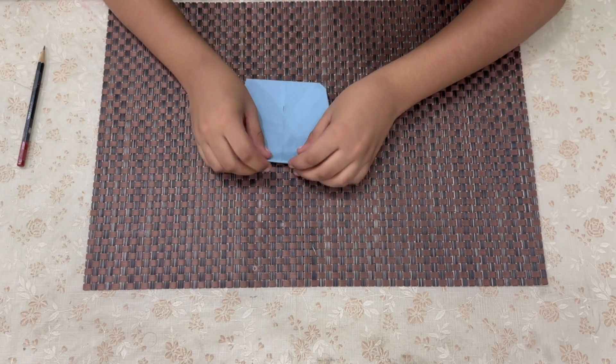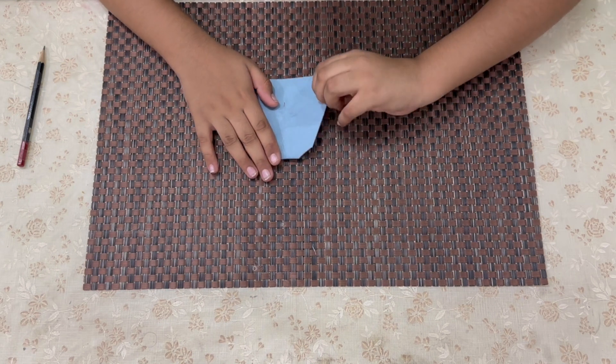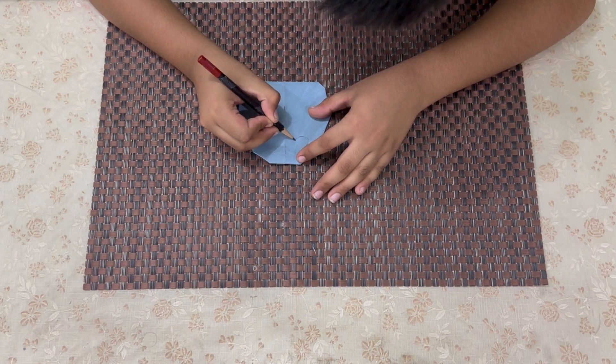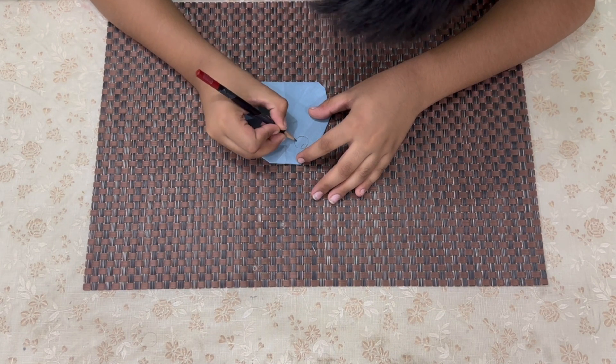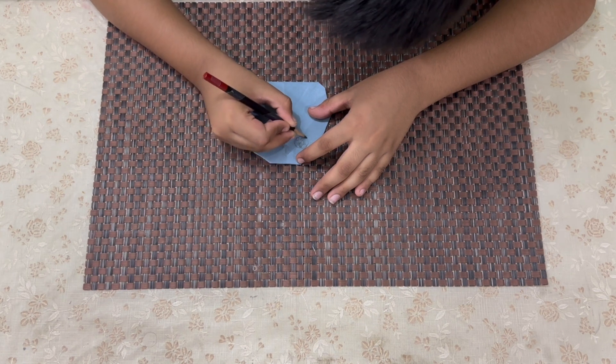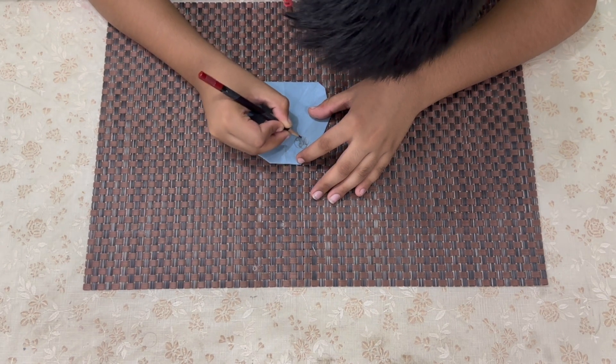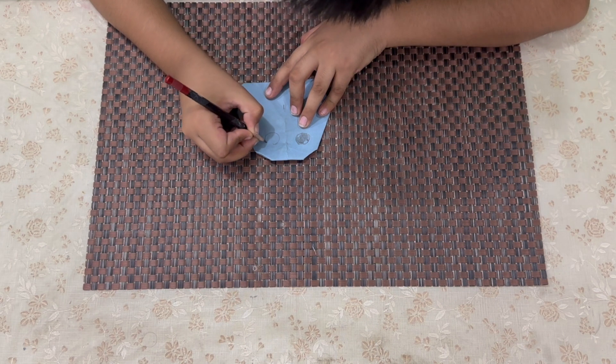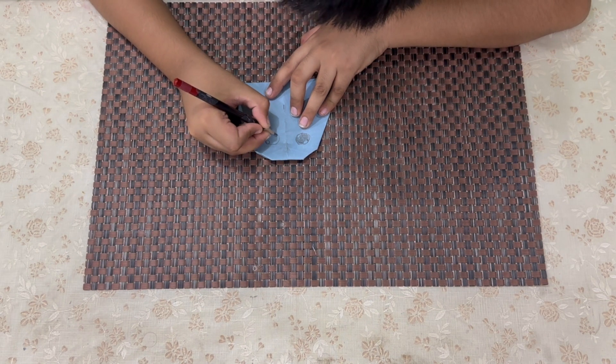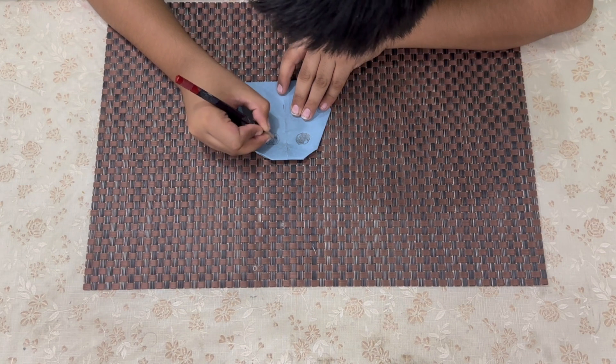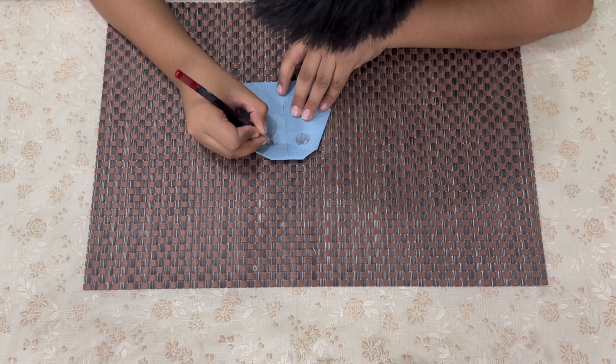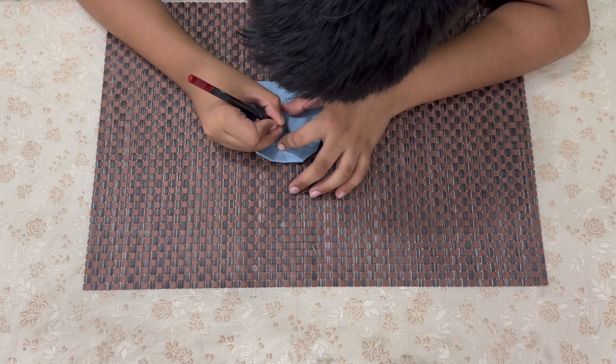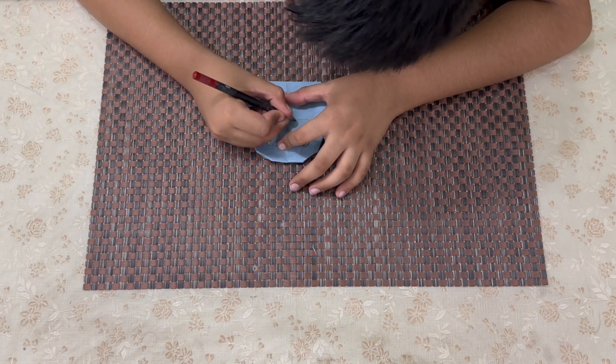There we have the base of the squishmallow, and now let's start drawing the little details. First, I'll start with the eye, and now the second, and now for its little smile. We're making it a cat.